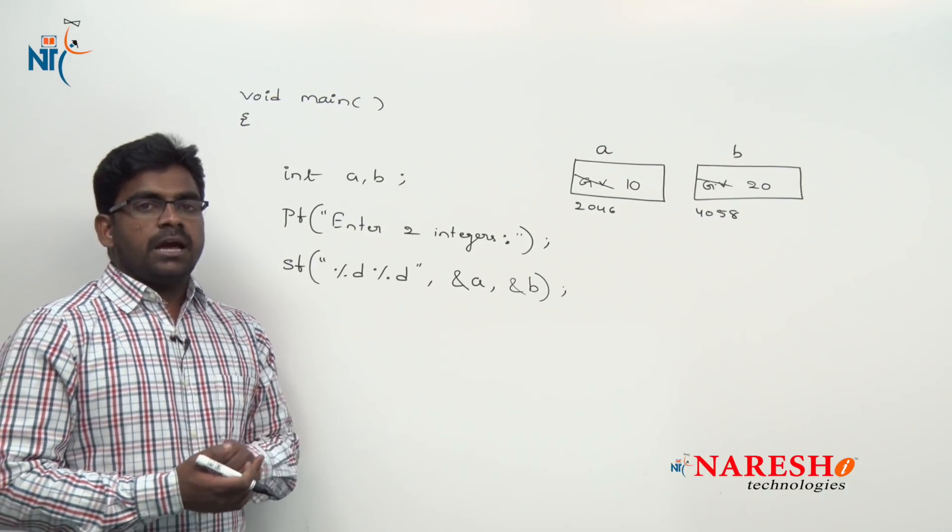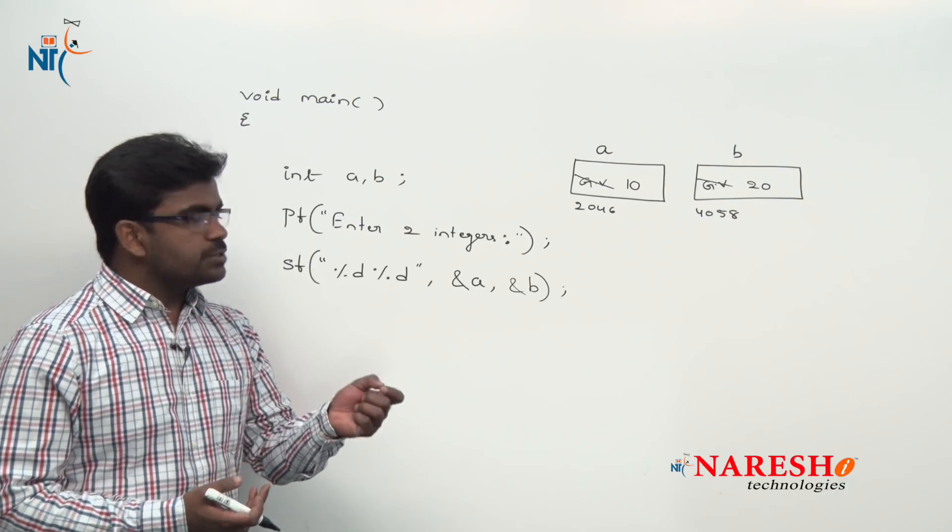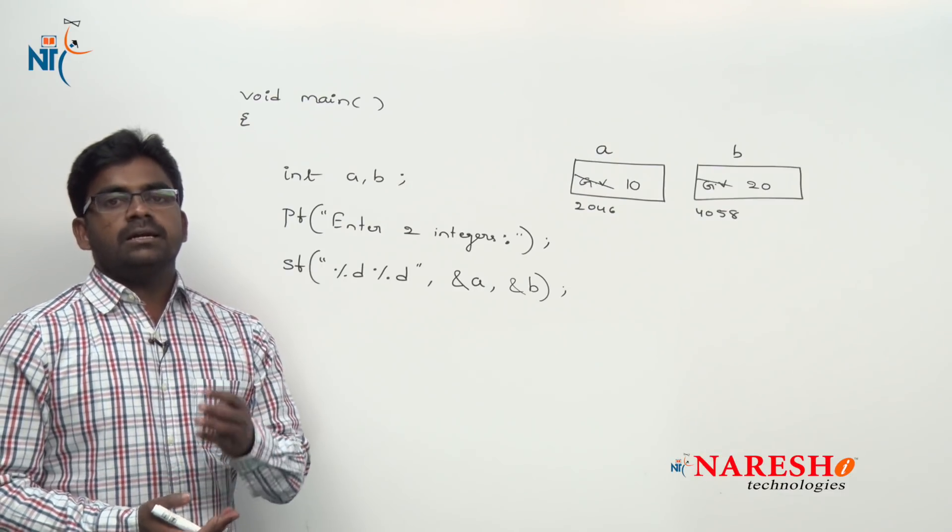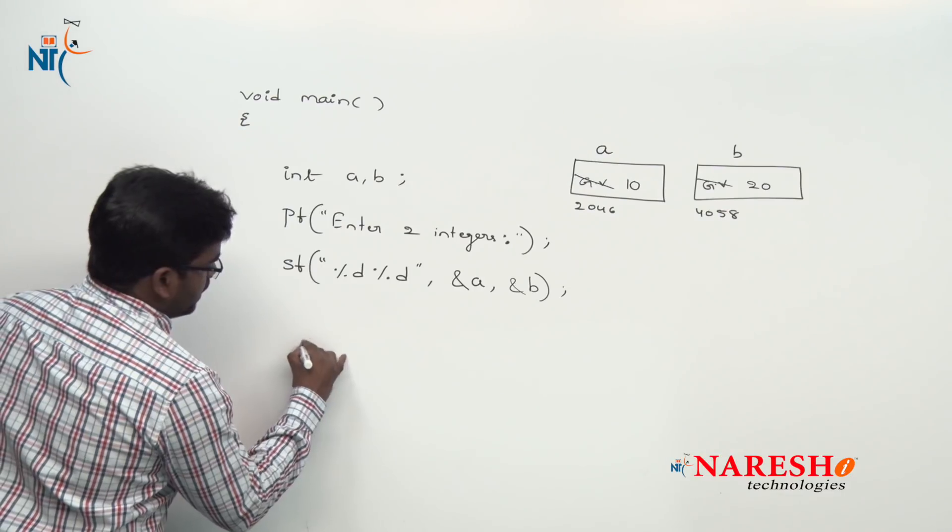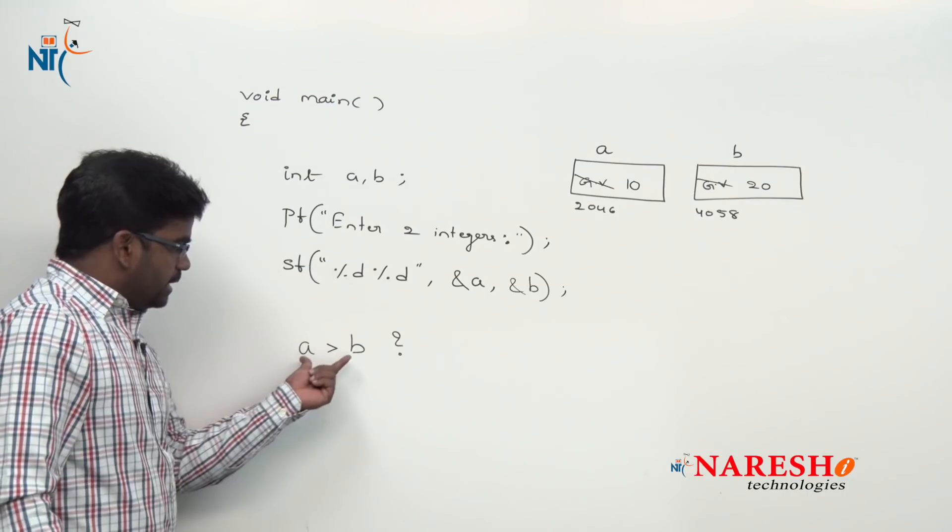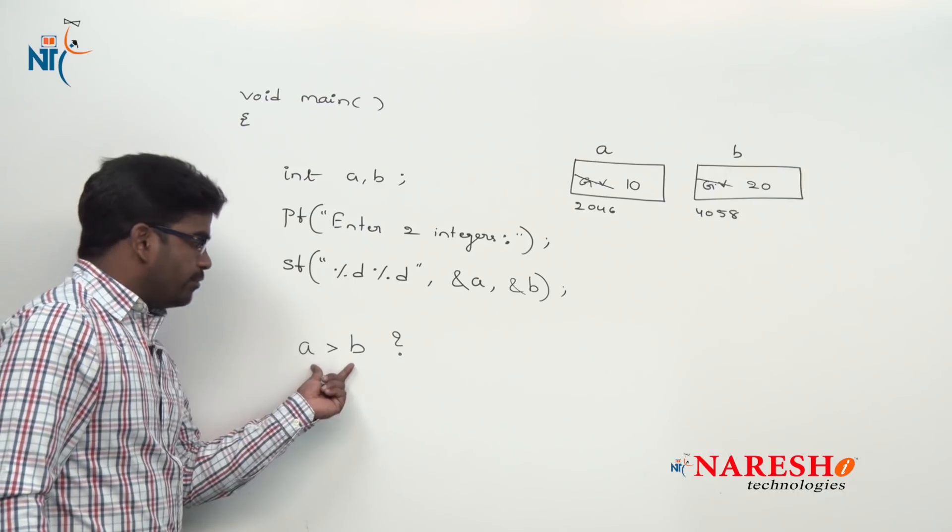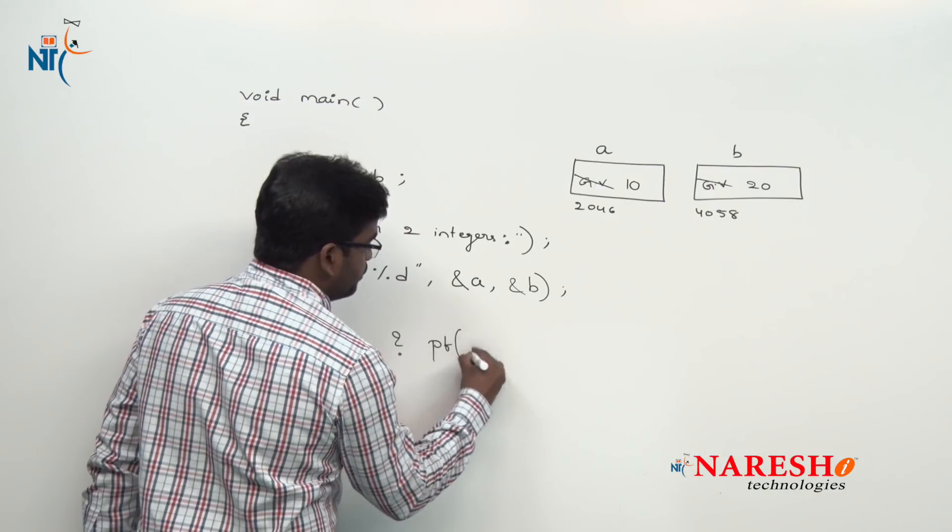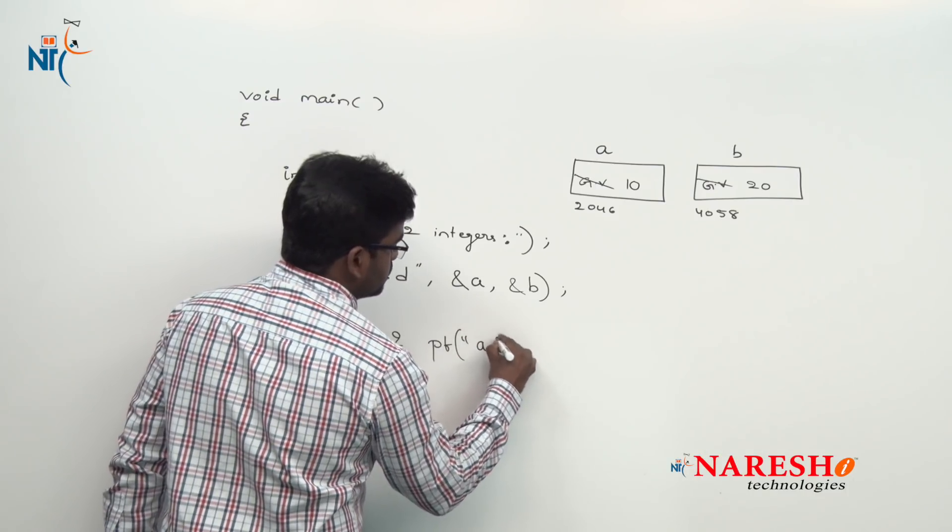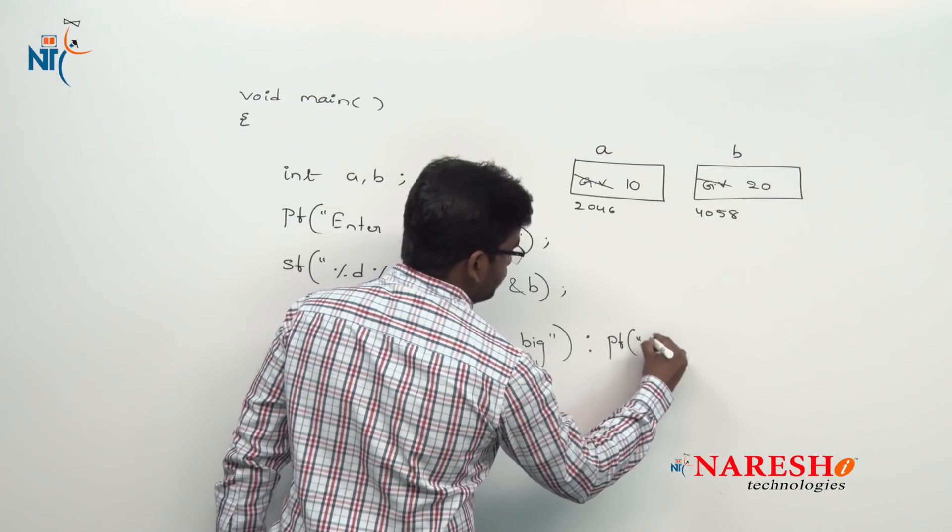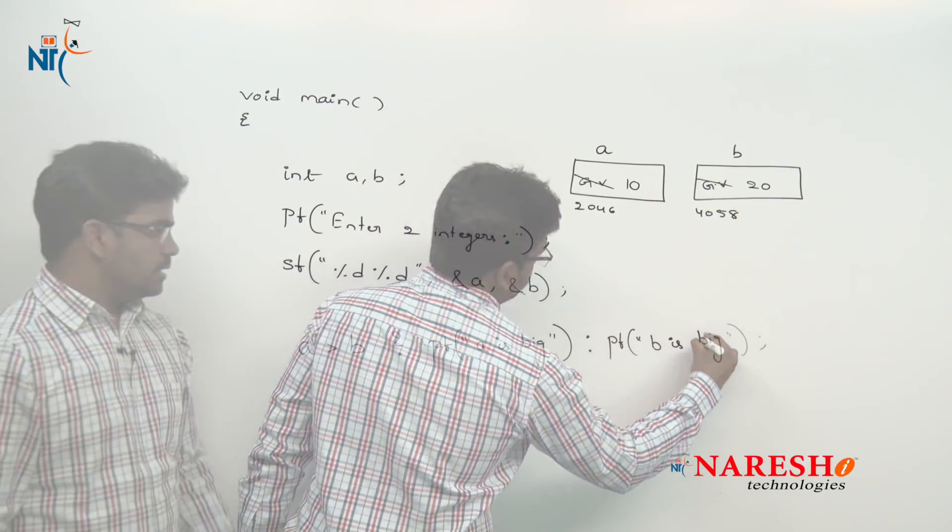Next I want to check which is the biggest one using conditional operator, we can say ternary operator. If a is greater than b, question mark - this is the condition followed by the question mark and expression. Directly we are writing printf a is big, colon, second expression printf b is big.